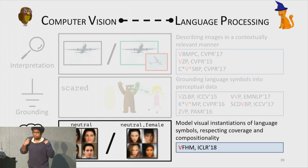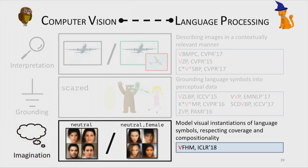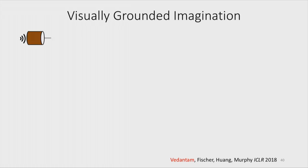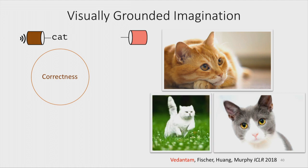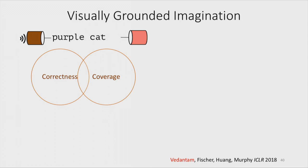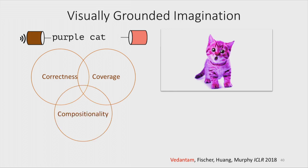Now let's move to imagination — modeling the visual instantiation of symbols in language while respecting coverage and compositionality. If I say 'orange cat,' you imagine a specific orange cat — that's correctness. If I just say 'cat' without specifying color, different people imagine different cats — that's coverage. And if I say 'purple cat,' you should imagine one even if you've never seen a purple cat before — that's compositionality. Together, these are the three Cs of visual imagination, and our work looks at how to build generative models that capture them.